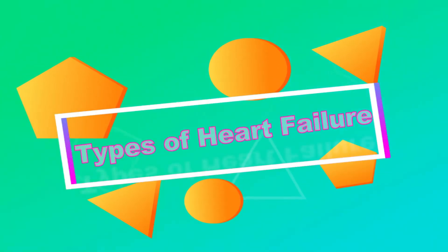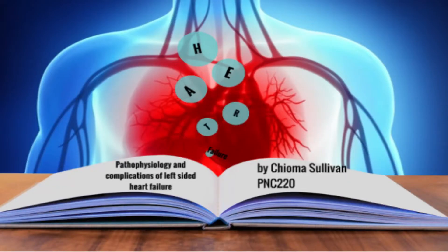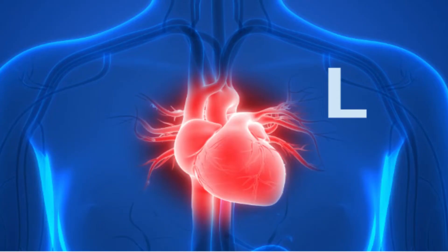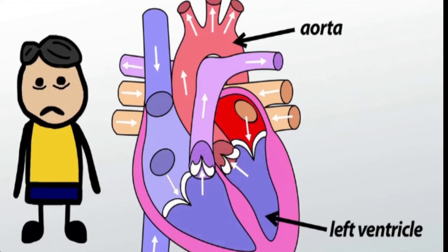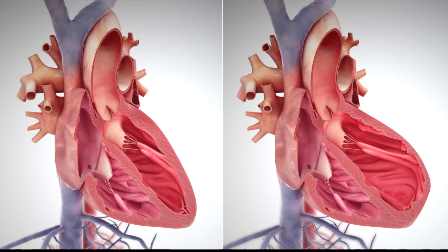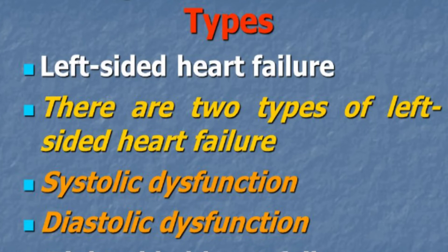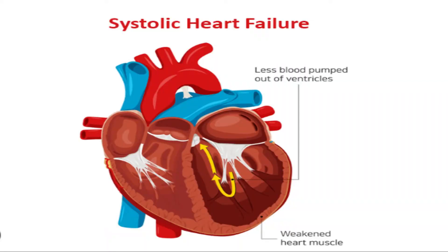There are a few different types of heart failure. Among the different types, the most common is left-sided heart failure. Left-sided heart failure is when it affects the side of your heart that pumps oxygen-rich blood out of the heart and to the body's tissues. There are two types of left-sided heart failure: systolic heart failure and diastolic heart failure.